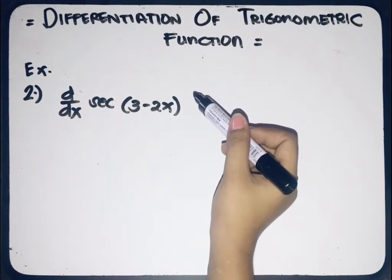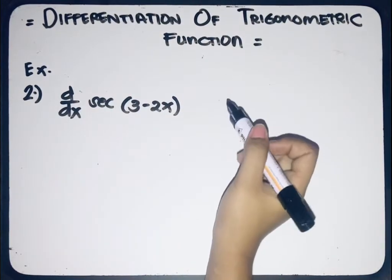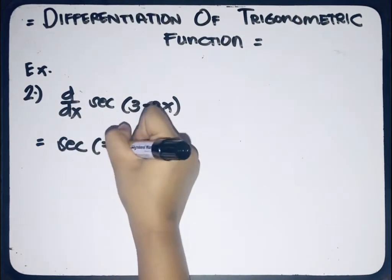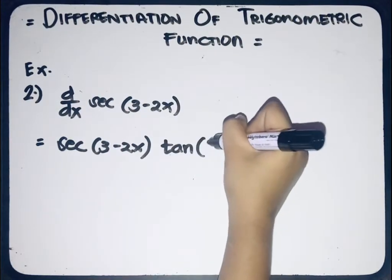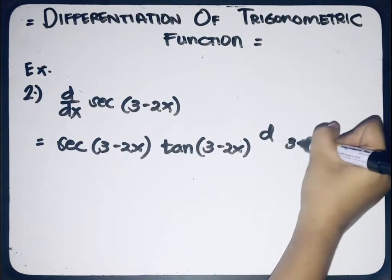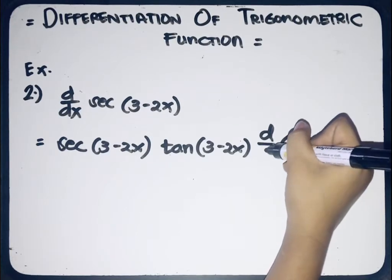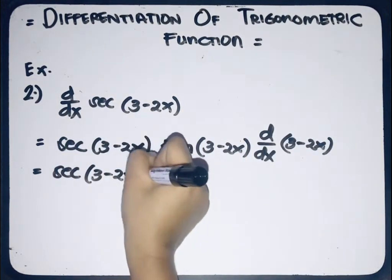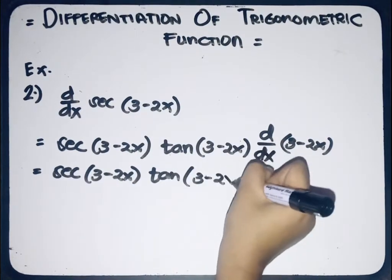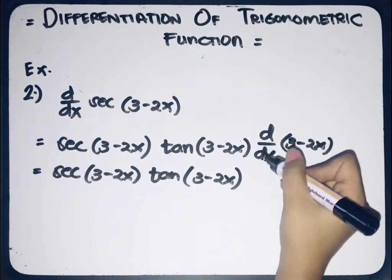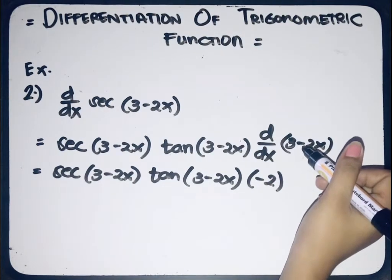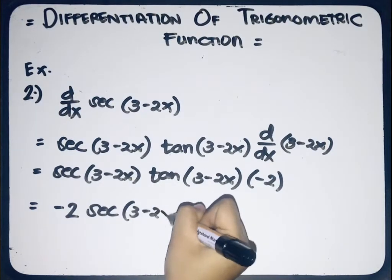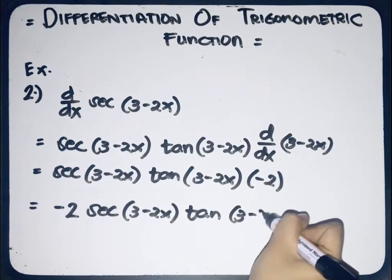Second example: we have the derivative of secant 3 minus 2x with respect to x. By applying the formula, the derivative of secant gives us secant of 3 minus 2x multiplied to tangent of 3 minus 2x, multiplied to the derivative of 3 minus 2x. The derivative of 3 minus 2x is negative 2. So we'll have negative 2 secant of 3 minus 2x multiplied to tangent of 3 minus 2x. That is the final answer.